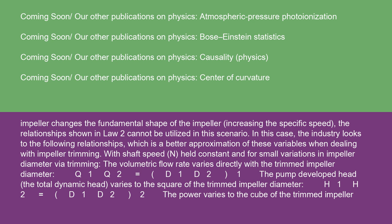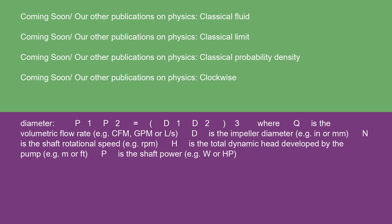The pump developed head (the total dynamic head) varies to the square of the trimmed impeller diameter. H1/H2 equals (D1/D2)^2. The power varies to the cube of the trimmed impeller diameter. P1/P2 equals (D1/D2)^3,